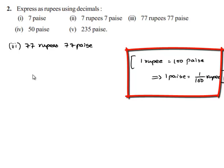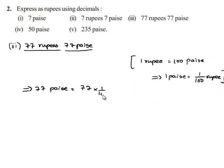So here, 77 rupees is already in terms of rupees, so we have to convert 77 paise into rupees. This implies 77 paise equal to 77 into 1 by 100 rupees, as 1 paise is equal to 1 by 100 rupees. This is equal to 77 upon 100 rupees.